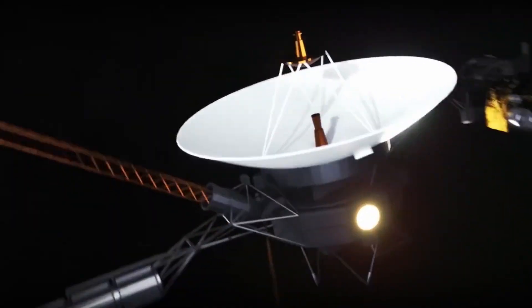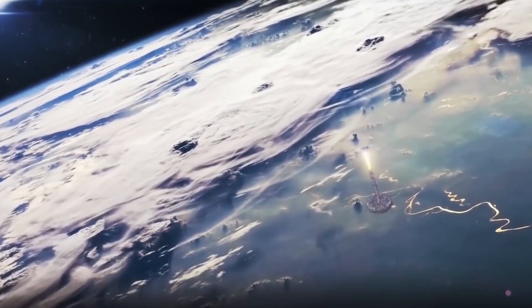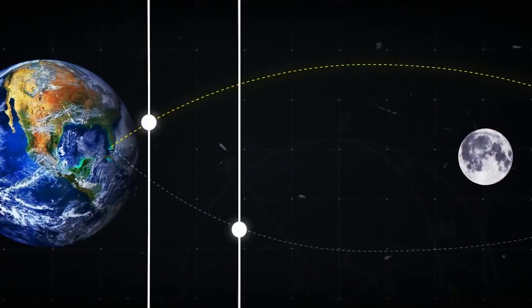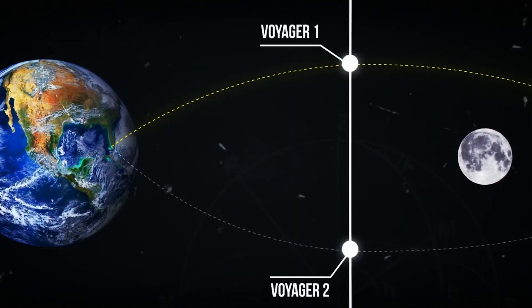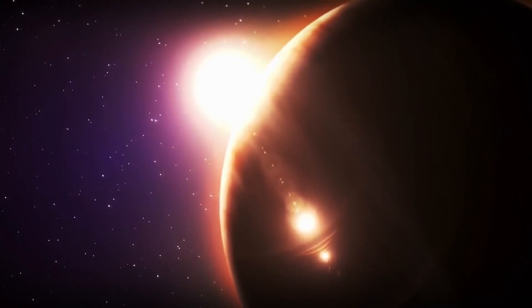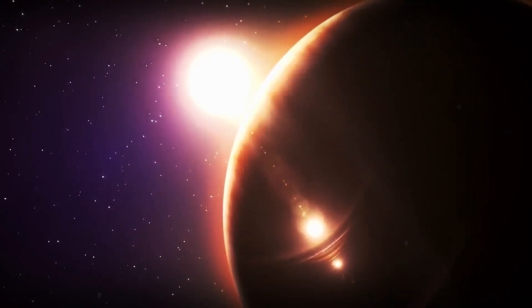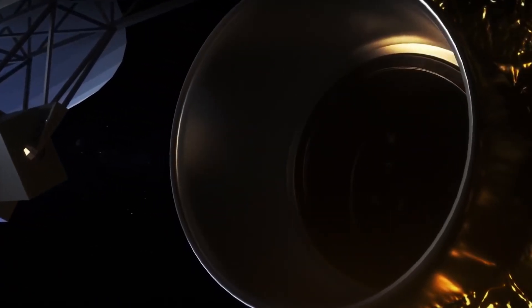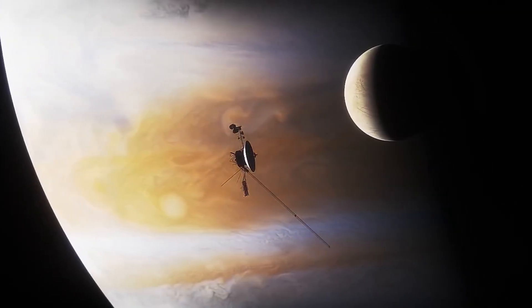Four years ago, the Voyager 2 probe became just the second human-made object in history to exit the solar system and officially enter interstellar space. On November 5, 2018, the craft officially left the solar system as it crossed the heliopause, the boundary that marks the end of the heliosphere and the beginning of interstellar space.